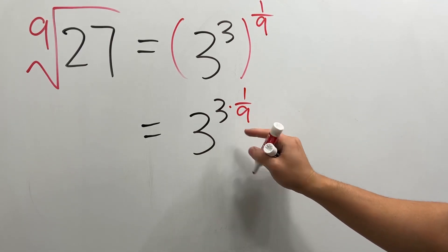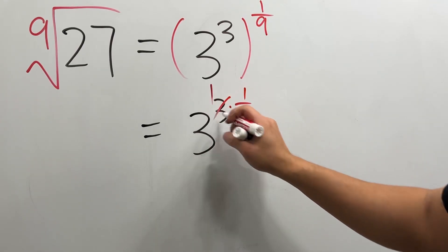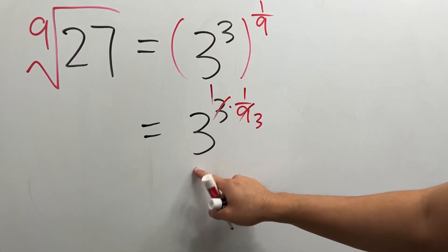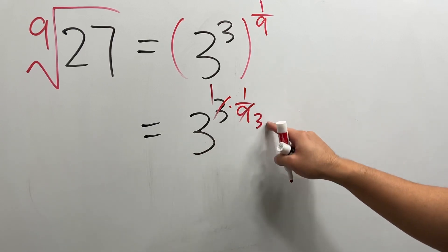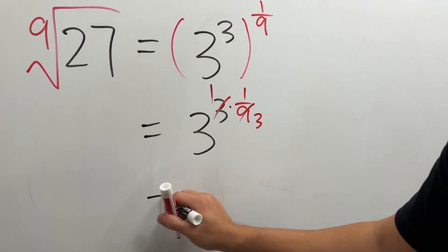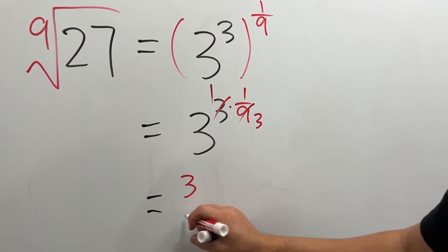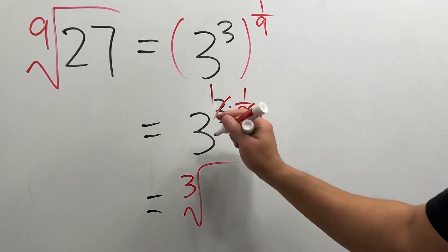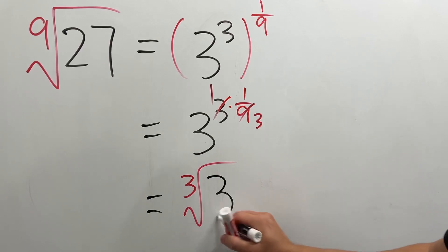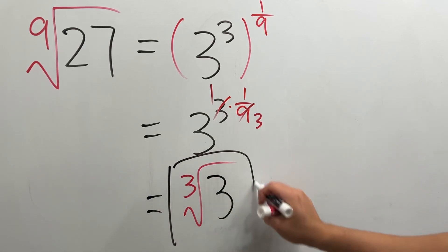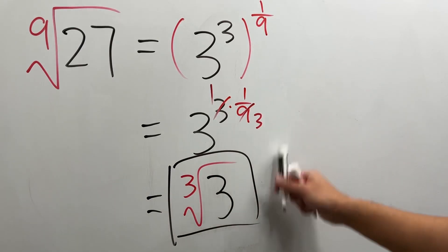Reduce this, we get 1 over 3. 3 to the 1 over 3 is the same as the cube root of 3. And we are done.